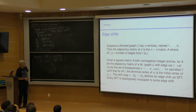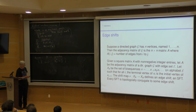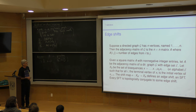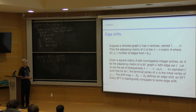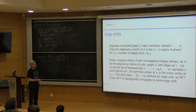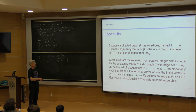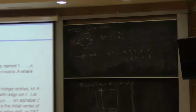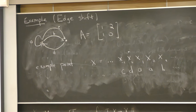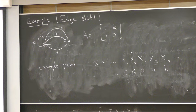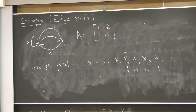Edge shifts. Suppose we have a directed graph G with n vertices named 1 to n. The adjacency matrix of G is the n-by-n matrix where the ij entry is the number of edges from i to j. For example, on the blackboard there is a directed graph with each edge labeled by its name; the edge set is {A, B, C, D}. There is one edge from vertex 1 to itself, two edges from vertex 1 to vertex 2, etc. Given any square non-negative integer matrix A, you can draw a graph which has it as its adjacency matrix.